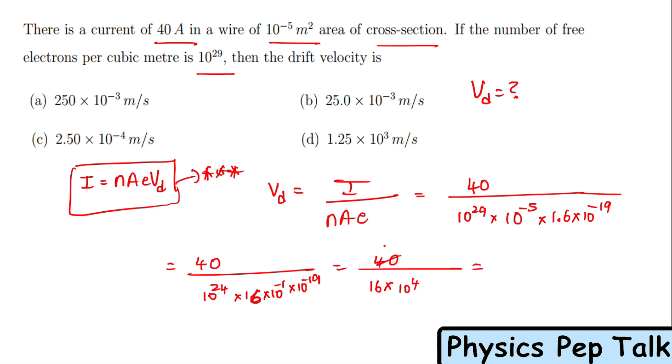40 divided by 16 is 2.5. So this becomes 2.5 × 10⁴ in the denominator, which gives 2.5 × 10⁻⁴. The SI unit of drift velocity is meter per second. Option C, 2.5 × 10⁻⁴ m/s, is the correct answer.